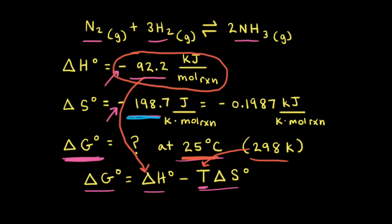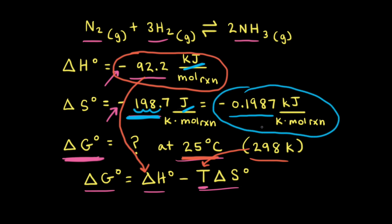For ΔS⁰, notice we have this in joules, whereas ΔH⁰ was in kilojoules. So we need to convert ΔS⁰ into kilojoules per Kelvin mole of reaction. One way to do that is to move the decimal place three to the left, which gives us negative 0.1987 kilojoules per Kelvin mole of reaction. We then plug this in for ΔS⁰.